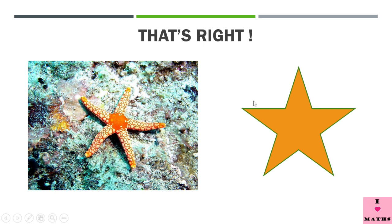Star is also a polygon. Let us count how many sides a star has: 1, 2, 3, 4, 5, 6, 7, 8, 9, 10 — there are 10 sides in a star. So a star is a decagon. 'Deca' means 10 and '-gon' means closed figure, so decagon means a 10-sided closed figure.